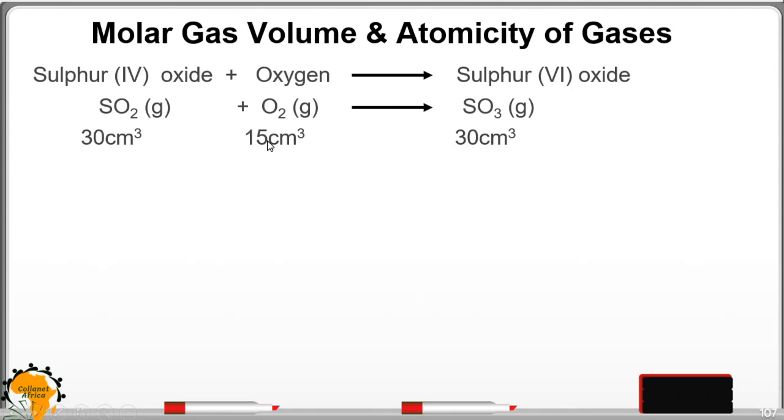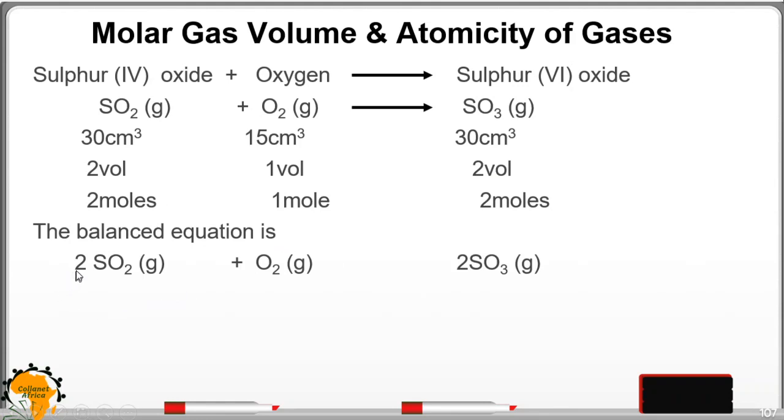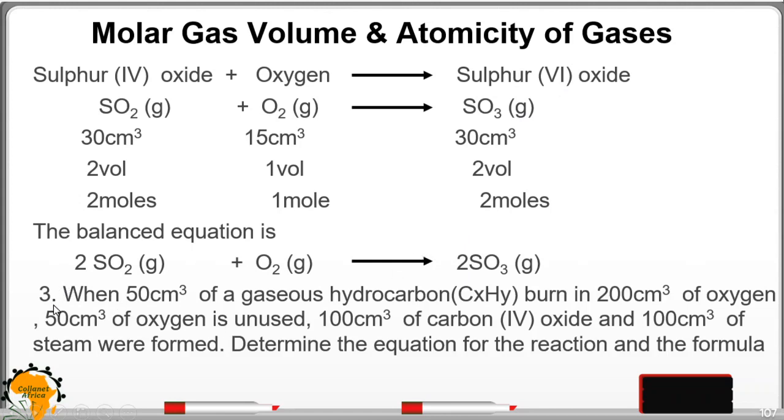Divide with the smallest volume to get one volume, two volume, and two volumes. So the number of moles is 2, 1, 2, which is as per the volumes. The balanced equation for this will be 2 SO2, then 1 for oxygen, and 2 for sulfur trioxide.